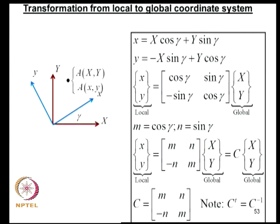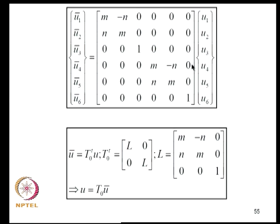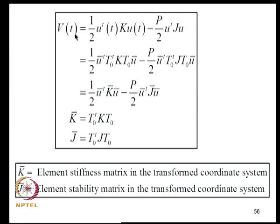The rules for coordinate transformation and assembly are the same as developed previously. The global and local degrees of freedom are related through U_bar = T₀ᵀ·U, where T₀ is the transformation matrix. Substituting into the total potential energy expression gives the elastic stiffness and stability matrices in the global coordinate system, yielding K_bar and J_bar for each element.